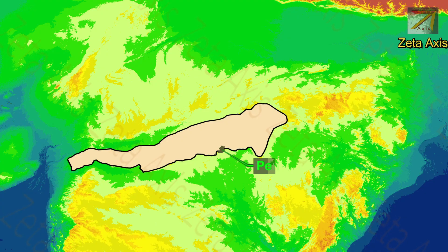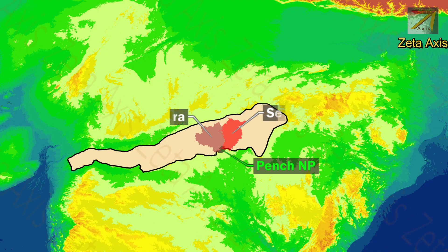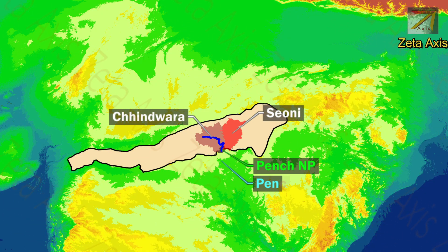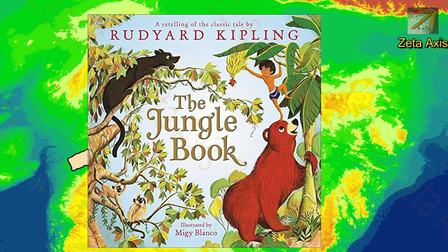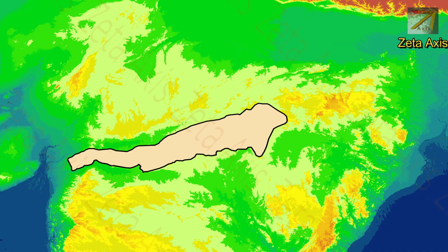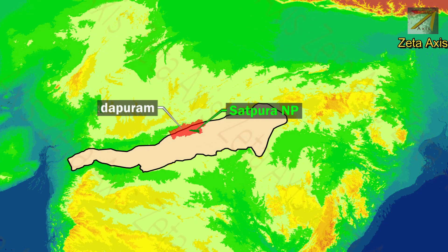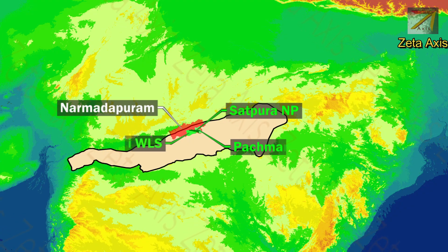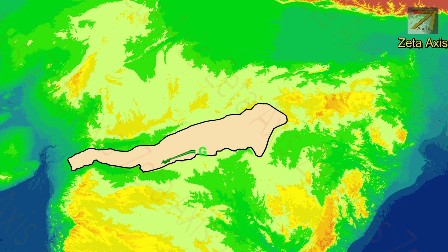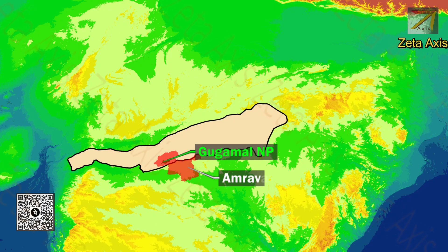The Pench National Park is located south of Satpura hills in Seoni and Chhindwara districts. River Pench flows through Pench National Park. Rudyard Kipling's Jungle Book was based on Pench National Park. The Satpura National Park is located in Narmadapuram district. Adjoining the Satpura National Park lie Bori and Pachmarhi sanctuaries. Gugamal National Park is located in Amravati district of Maharashtra.